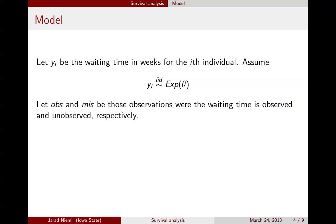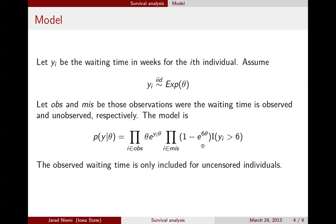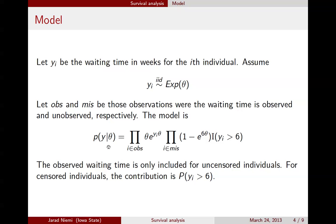We introduce notation: 'obs' for those individuals who actually had their waiting time observed, and 'miss' for those who didn't. In this example, those in 'miss' had waiting times greater than 6 weeks, but we don't know how far beyond 6 weeks. We write the joint distribution over all individuals, split into two categories: those observed — contributing the exponential density — and those not observed, whose contribution is just the probability of being greater than 6, which is 1 minus the CDF of the exponential distribution.